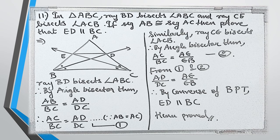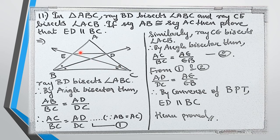This is the last question in practice set 1.2. In triangle ABC, ray BD bisects angle ABC and ray CE bisects angle ACB. If segment AB is congruent to segment AC, prove that ED is parallel to BC. Using the two angle bisectors and the fact that AB equals AC, we will use the angle bisector theorem twice and then the converse of the basic proportionality theorem.